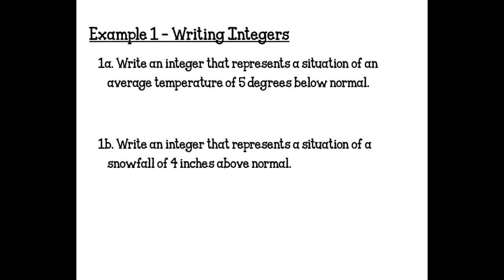Example 1: Writing integers. 1A — write an integer that represents a temperature of 5 degrees below normal. Since 'below' means going down, that is negative, so we write negative 5. 1B — write an integer for a snowfall of 4 inches above normal. That is plus 4, or positive 4.